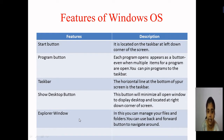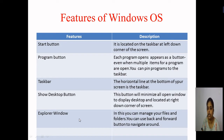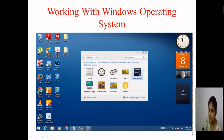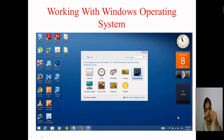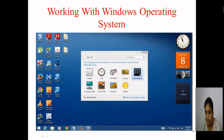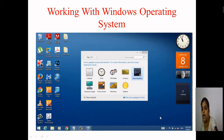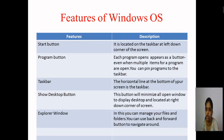The next feature is the Show Desktop button. This feature helps you to minimize all open windows to display your desktop. It is located at the right bottom corner of your screen. If you hover or click over there, whatever current programs you are executing on your desktop will all get minimized and directly the desktop screen will be shown to the user.